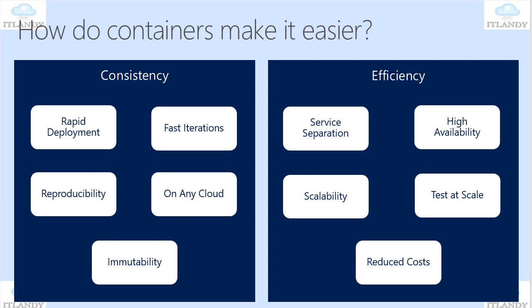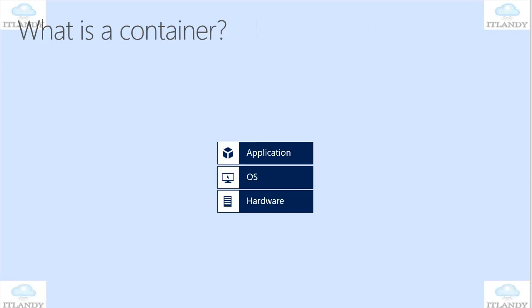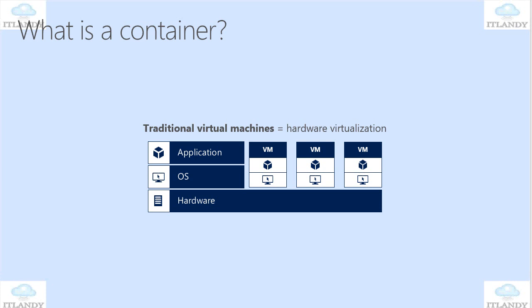So how can I explain what a container is? Let's look at the traditional approach when we have a normal VM. Here you can see: on the hardware, you have the OS, and on the OS you have the application installed. The traditional virtual machine came after that. Rather than having one server with OS and application, we start having one hardware with multiple VMs on it — like Hyper-V or VMware — and each VM hosts an application.